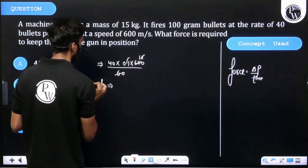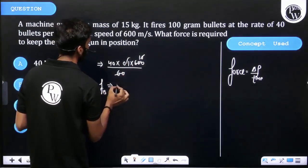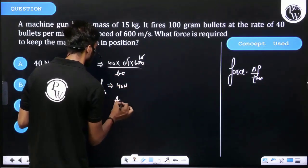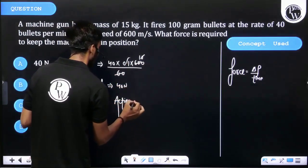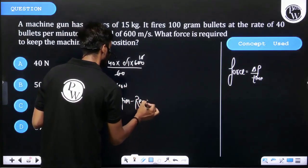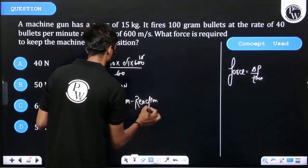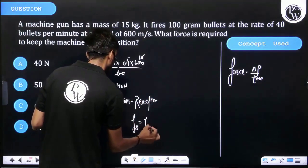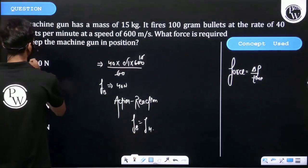From action-reaction law, we can write force on bullet is equal to force on machine. Then option number A is correct.